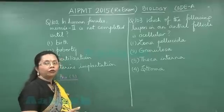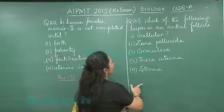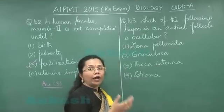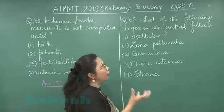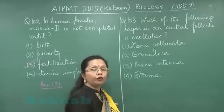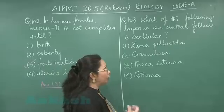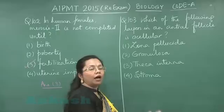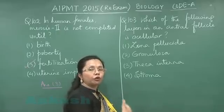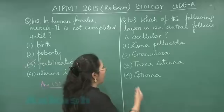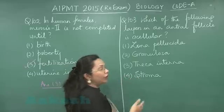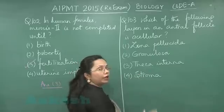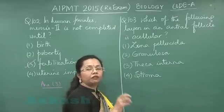Let us move on to the next question 103: which of the following layers in an antral follicle is acellular? The antral follicle is the follicle in which the fluid-filled space, that is the antrum, has been formed. Once the antrum is formed, it is called the antral follicle, and before that — like the primary follicle — it would be called the pre-antral follicle.